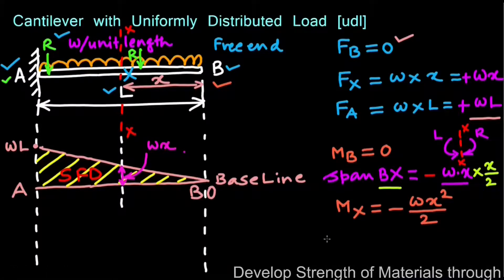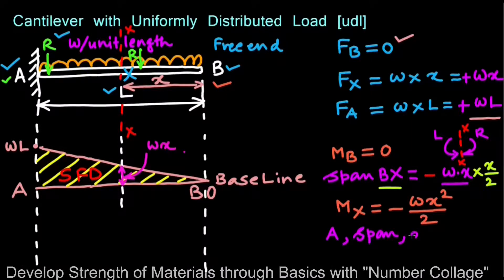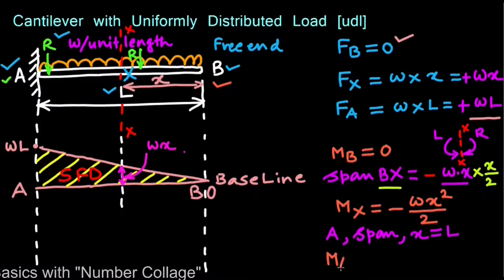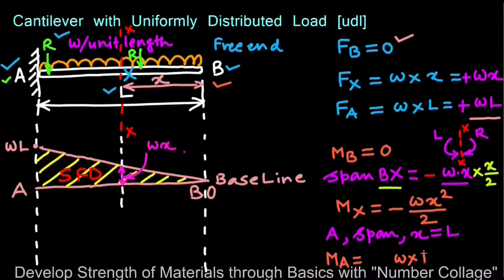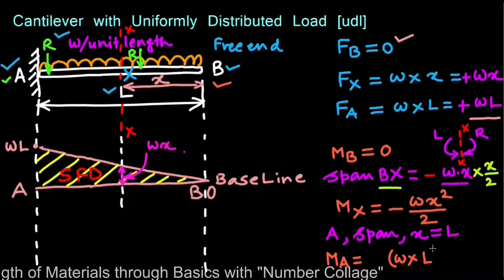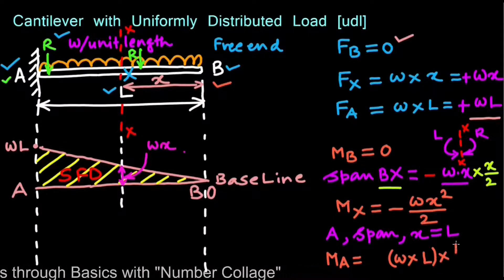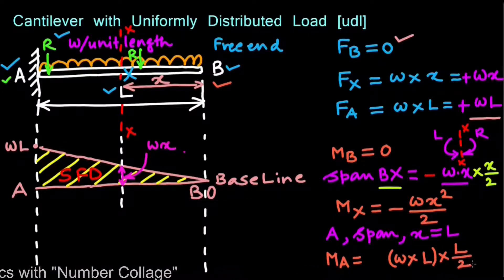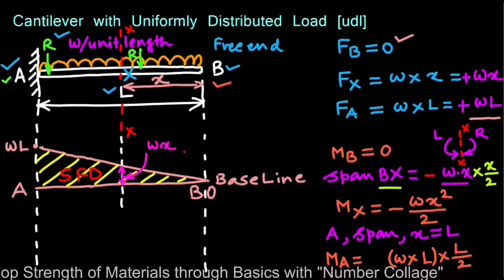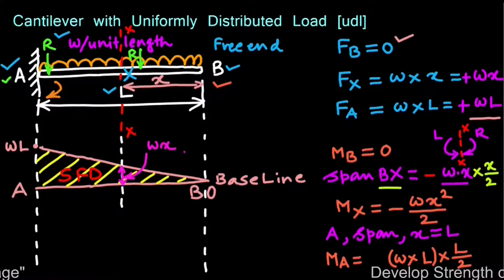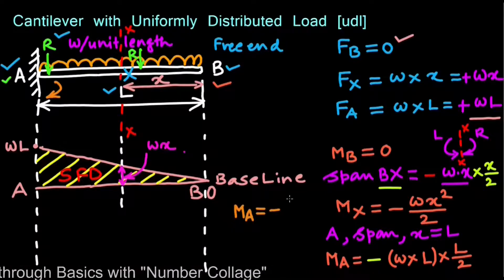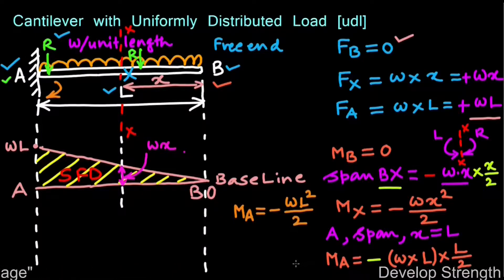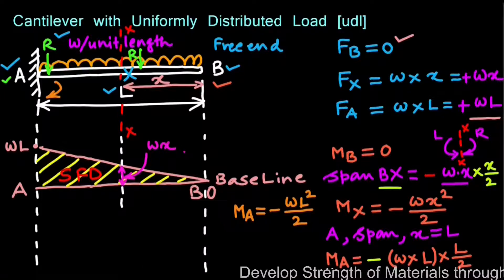The bending moment at point A, where the span X equals L, is MA = −WL²/2. This is because the rate of loading W multiplied by span L acts at half the total span L/2, giving a clockwise moment to the right of point A, which is negative. Now we will plot these values and draw the bending moment diagram.